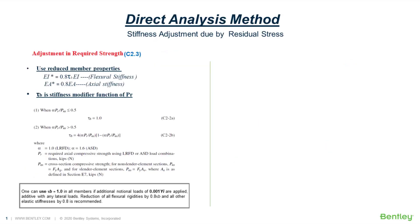The notional load is to be included as the minimum lateral load for all gravity-only combinations and all other lateral load combinations where the second-order drift to first-order drift ratio is greater than 1.7. The notional load ensures the structure is being destabilized for all combinations, which is necessary for capturing the proper second-order effect. The next factor is stiffness adjustment due to residual stress — one of the vital factors considered in direct analysis. Since the member capacity is already modified in the column curve for residual stress effects, we also have to consider this effect on stiffness and structural response.